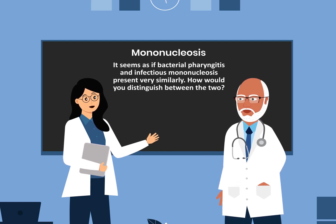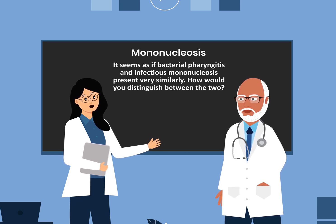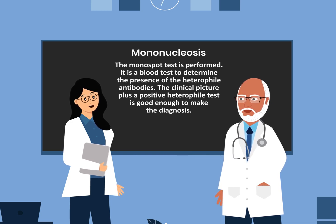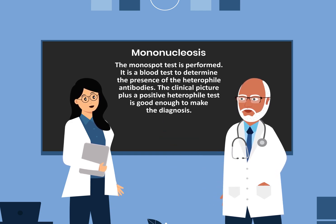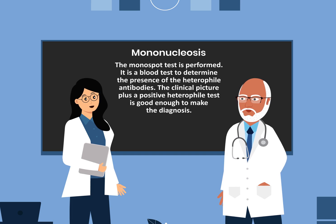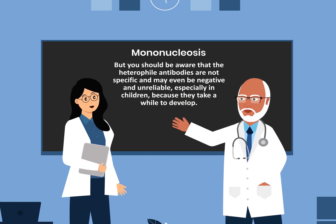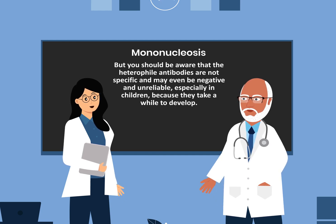Bacterial pharyngitis and infectious mononucleosis present very similarly. The Monospot test is performed — it is a blood test to determine the presence of the heterophile antibodies. The clinical picture plus a positive heterophile test is good enough to make the diagnosis, but you should be aware that the heterophile antibodies are not specific and may even be negative and unreliable, especially in children, because they take a while to develop.